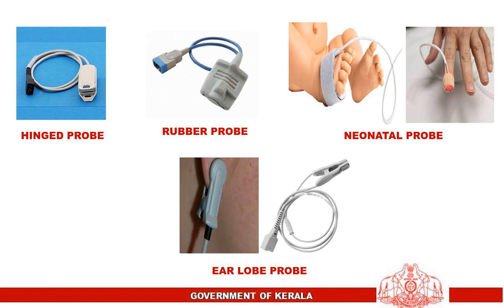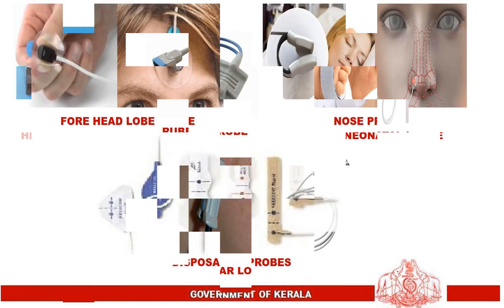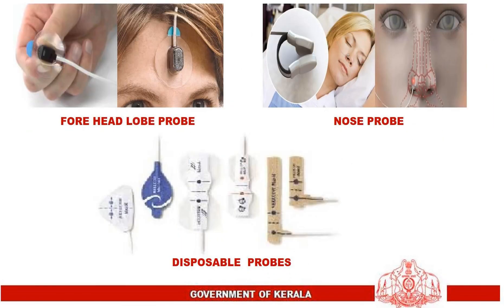Common types of pulse oximeter probes include: hinged probe, rubber probe, neonatal probe, ear lobe probe, forehead probe, nasal probe, and disposable probe.